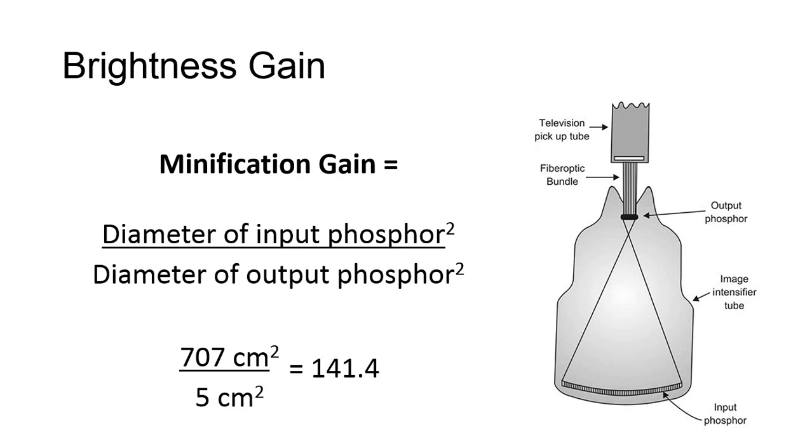In your textbook, the example given has a 30 cm input phosphor and a 2.5 cm output phosphor. The formula for diameter is pi times radius squared. For the input phosphor, that's 3.14 times 15 squared, which equals 706.5 square centimeters. For the output phosphor, that's 3.14 times 1.25 squared, which equals 4.9 square centimeters. These round to 707 and 5, respectively.